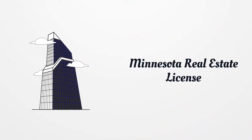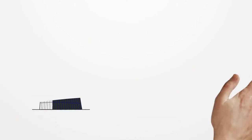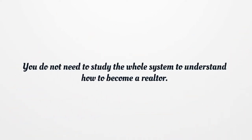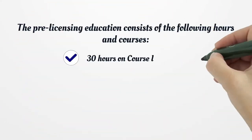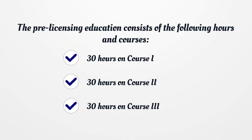Minnesota Real Estate License. You do not need to study the whole system to understand how to become a Realtor. The pre-licensing education consists of the following hours and courses: 30 hours on Course 1, 30 hours on Course 2, and 30 hours on Course 3.